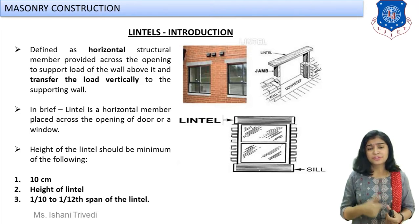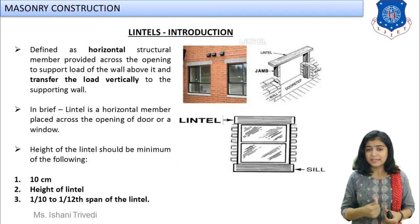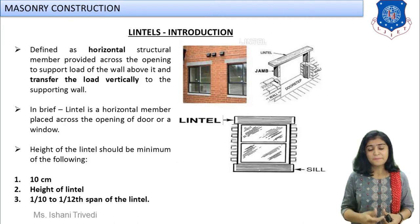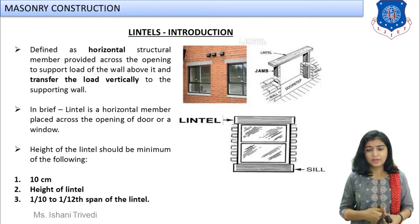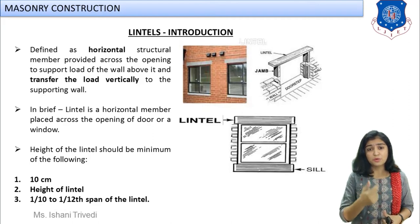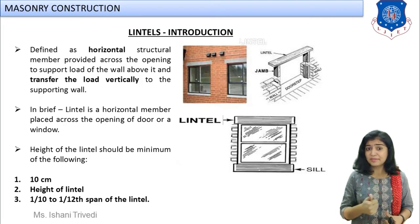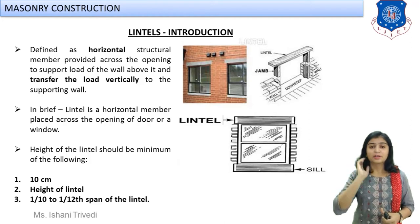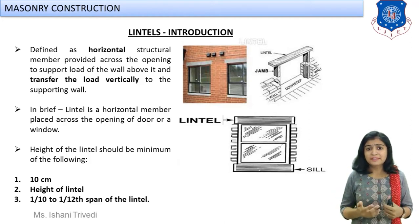For this specific purpose, the member provided at the lintel level — the horizontal structural member, the horizontal beam or horizontal slab — that horizontal structural member provided across the opening of the structure to carry the loads and transmit them safely to the surrounding side walls, is known as a lintel. We often refer to lintel level, sill level, plinth level, and gable level.